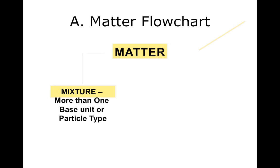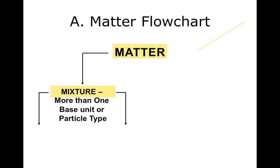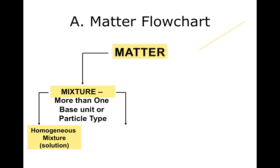In matter, there is a mixture. A mixture is when you have more than one particle type together. There are two types: a homogeneous mixture, which is called a solution, and a heterogeneous mixture, which is not called a solution.